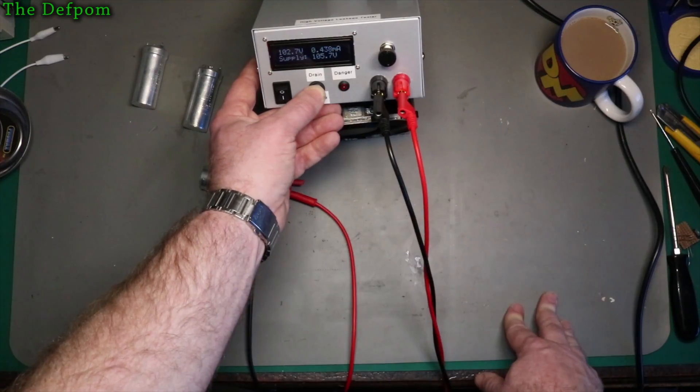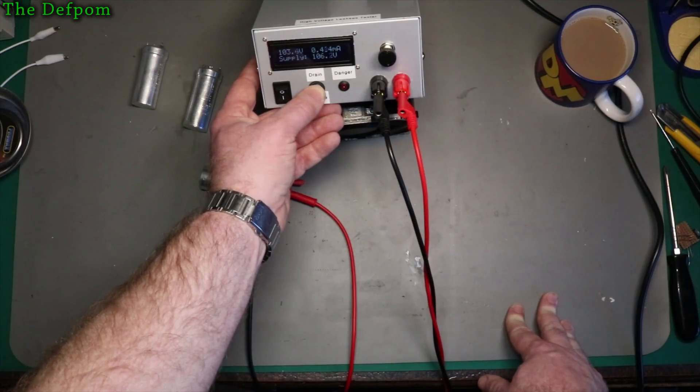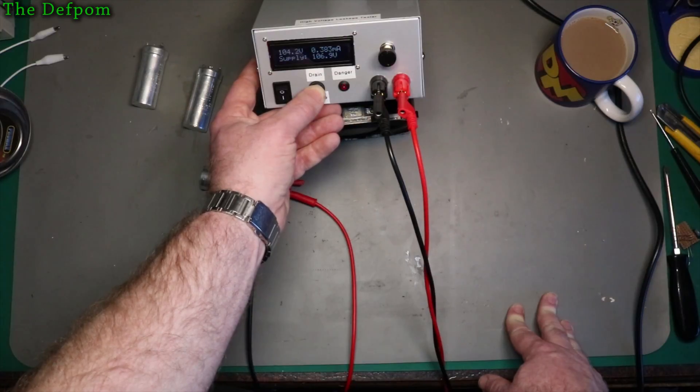Try and get around a similar sort of voltage level, 105 volts or so. That part looks pretty much the same as the others, maybe slightly higher current, not much. Now what happens when I release it? Let's see.